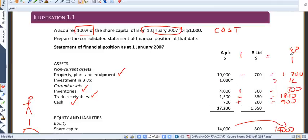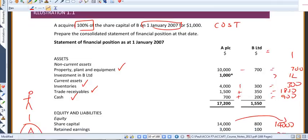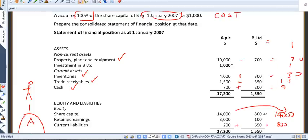Now, you've been given here B's figures at that date of acquisition, the 1st of January 2007. So, if I just tidy this page up for a moment and get you to look at B's statement of financial position.